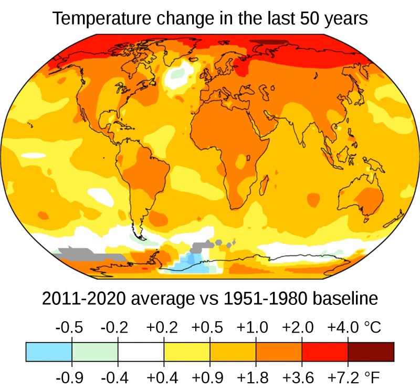The ocean also serves as a significant carbon sink via a two-step process. First, CO2 dissolves in the surface water. Afterwards, the ocean's overturning circulation distributes it deep into the ocean's interior, where it accumulates over time as part of the carbon cycle. Over the last two decades, the world's oceans have absorbed 20–30% of emitted CO2.